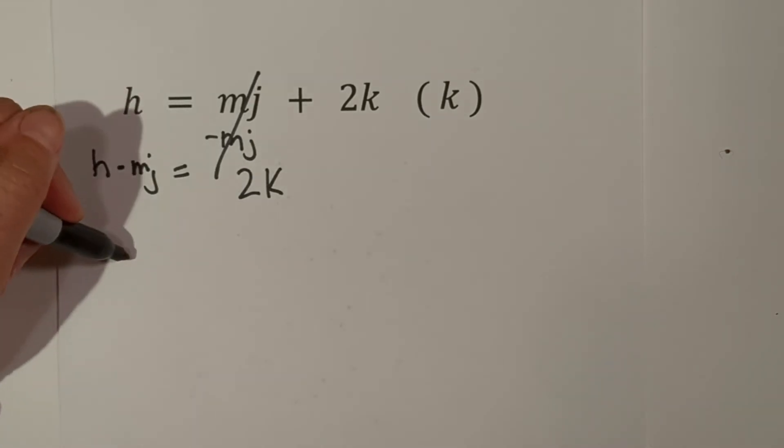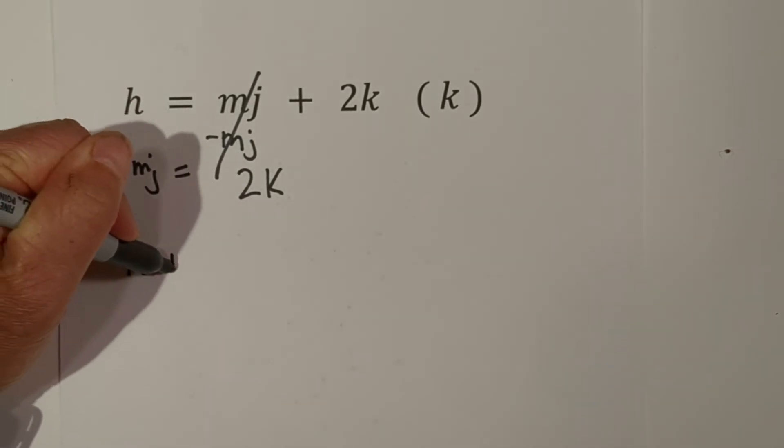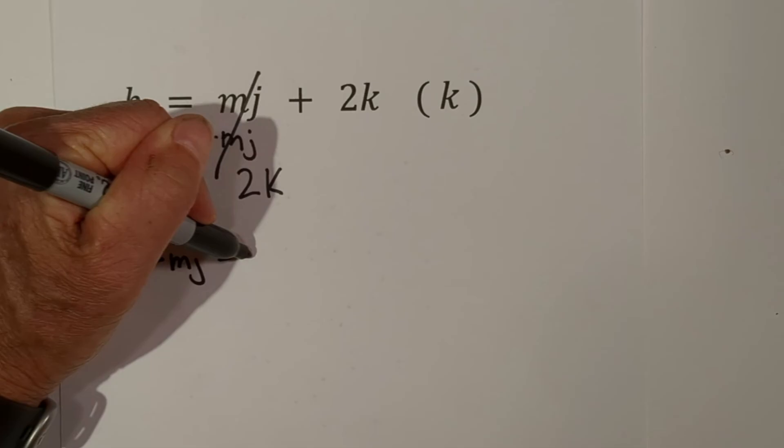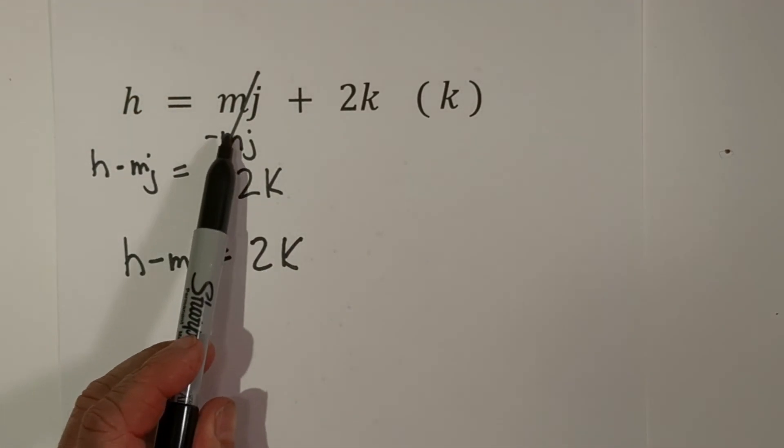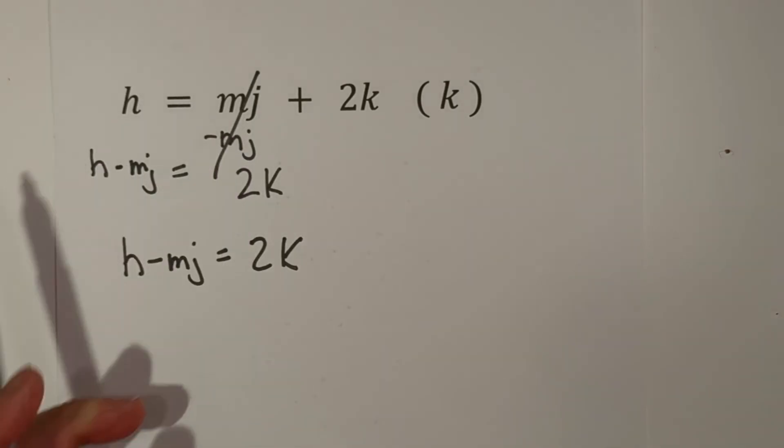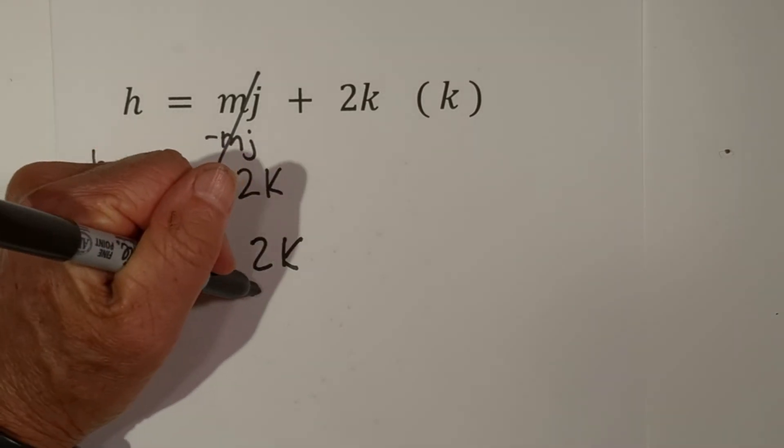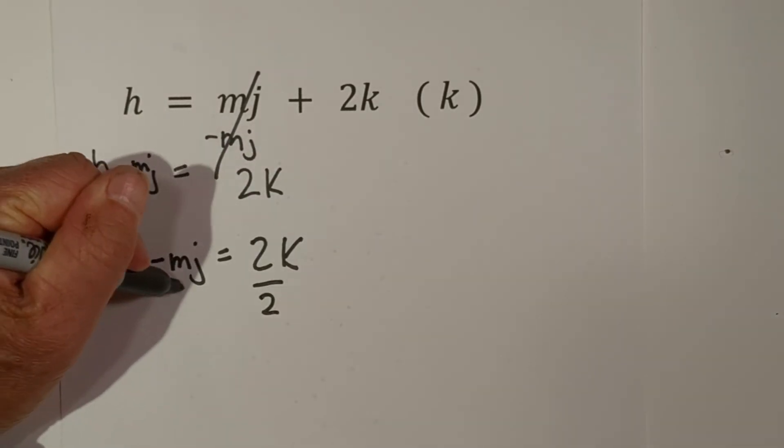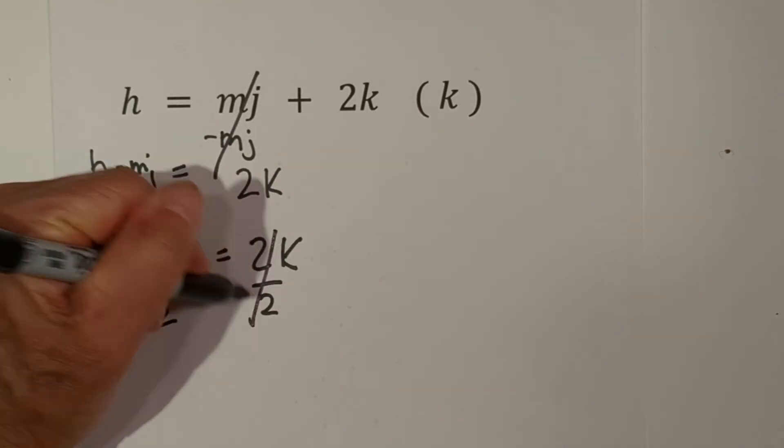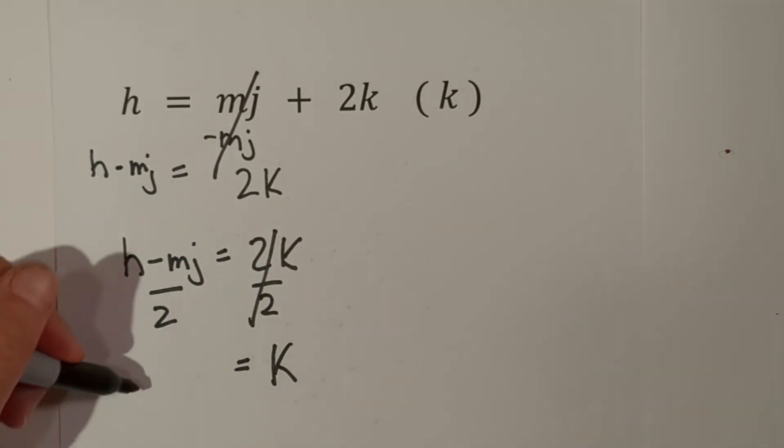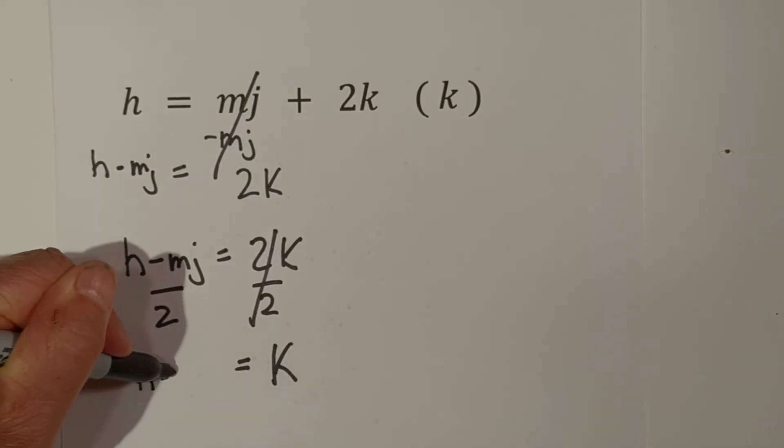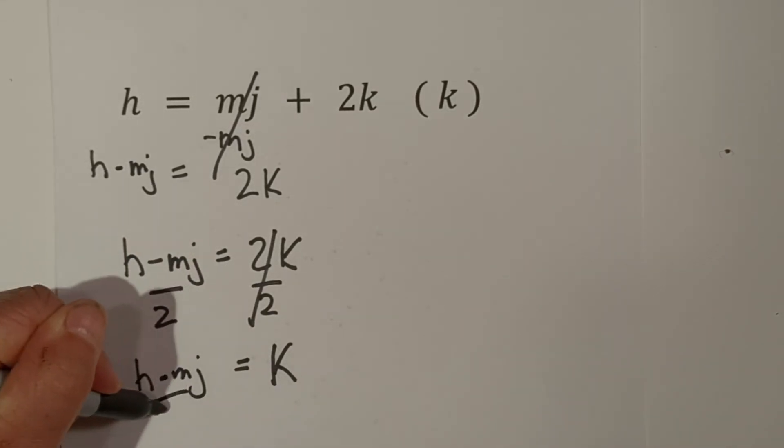So I'm going to rewrite this. H minus MJ equals 2K because we subtracted the MJ from each side. So now what we need to do is get K by itself by dividing both sides by 2. These cancel, so you're left with K equals H minus MJ over 2.